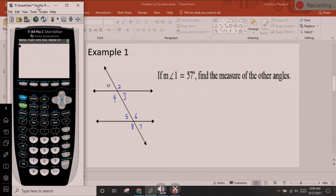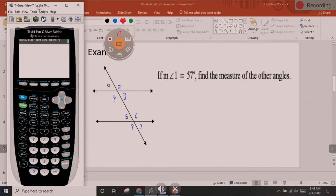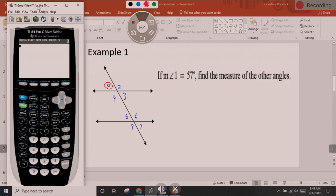So it says if the measurement of angle 1 is 57 degrees, find the measurement of all of the other angles. So the first thing I want you to know is that if this is 57, all of the acute, all of the small angles are equal to 57. And here's how you locate those. Angle 3, the one directly across from it is also 57.